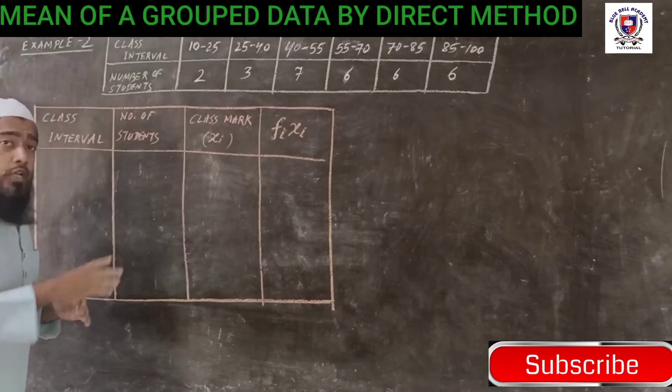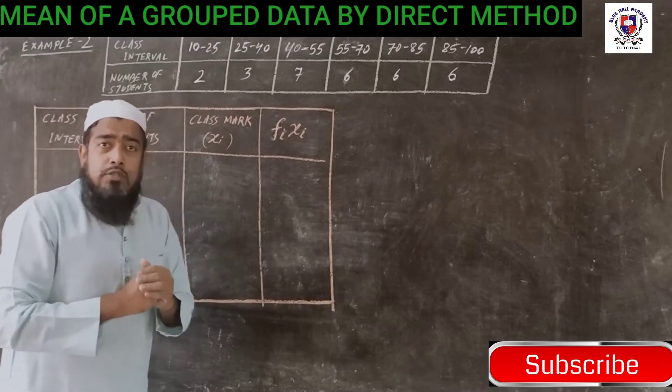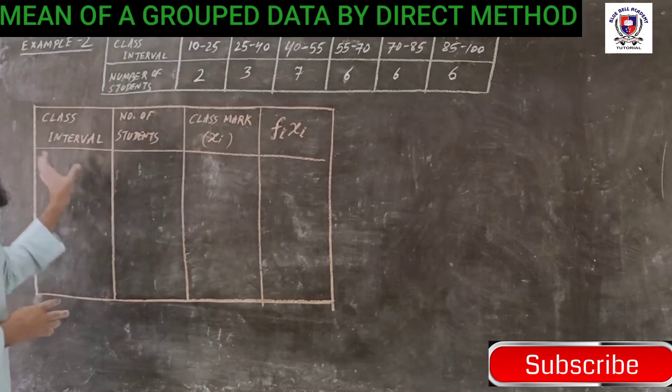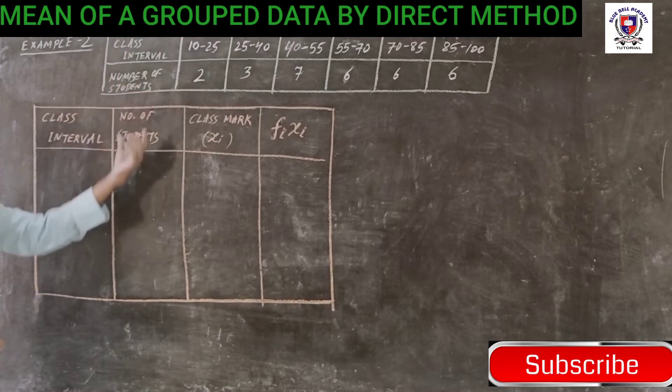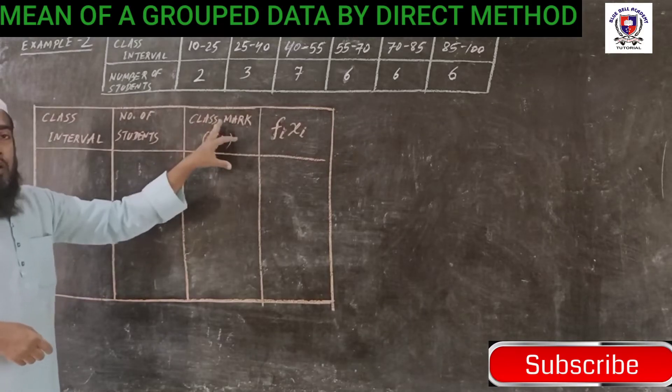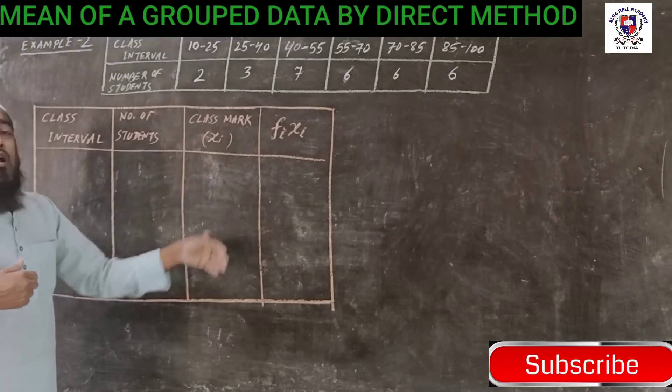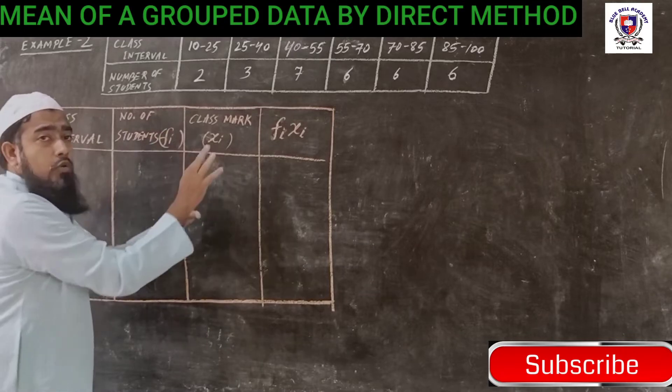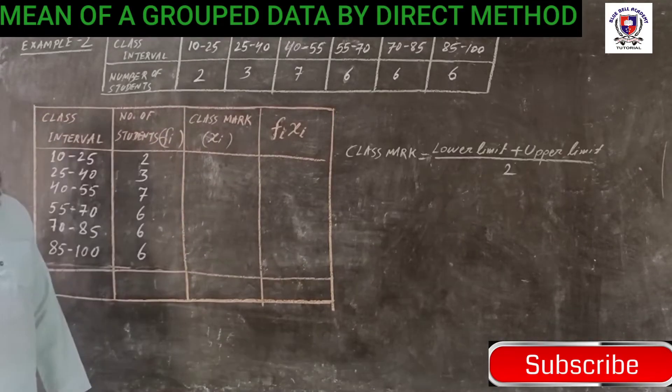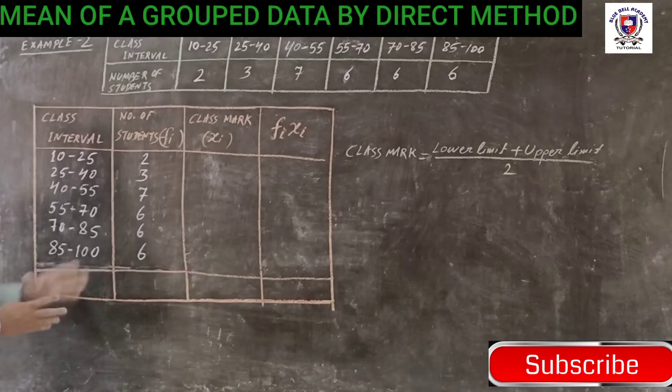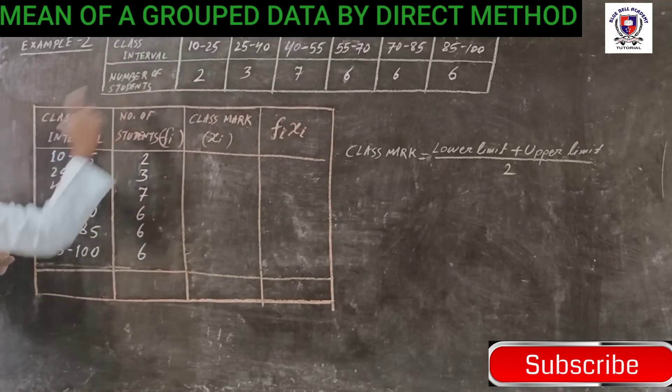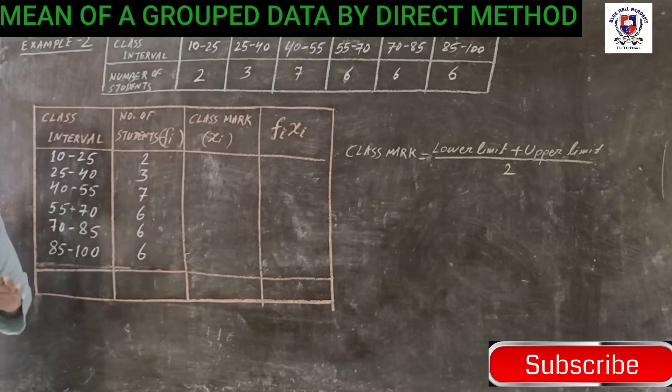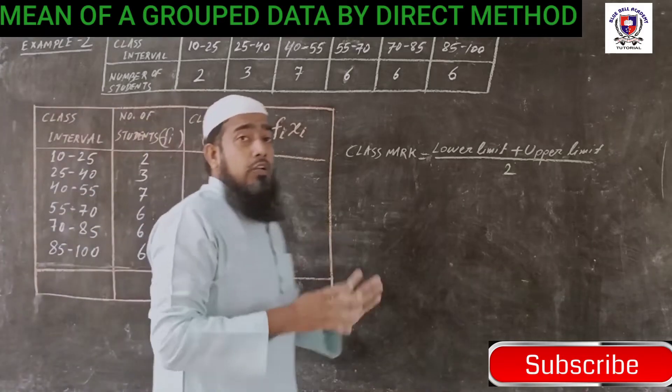As I told you earlier, we drew only 3 columns before but here 4 columns are needed: one extra column to find the xi because here we have to write the class interval, here the number of students, and here we have to find the class mark. I will explain how to find that class mark, and then the last column is the product of fi and xi. So here we took all the class intervals that were given in the question and all the number of students, that is fi or the frequency.